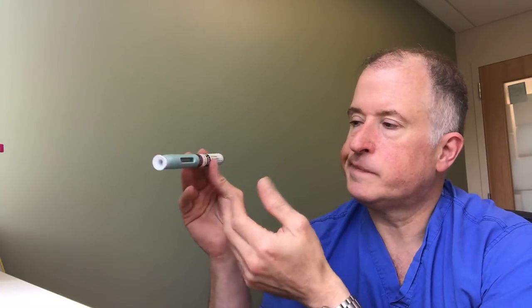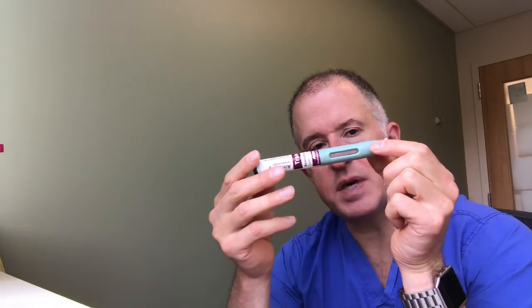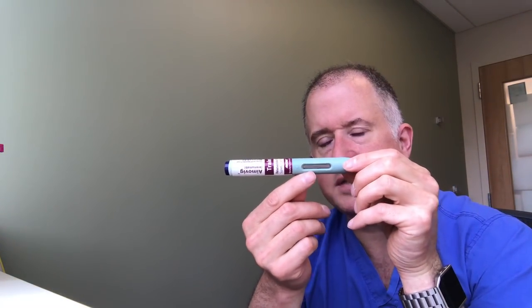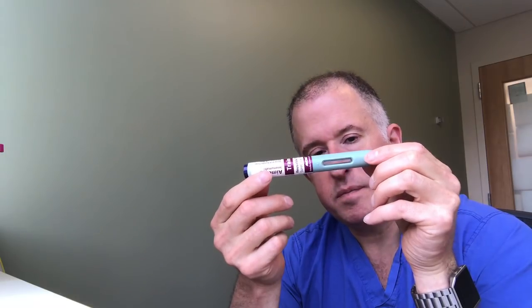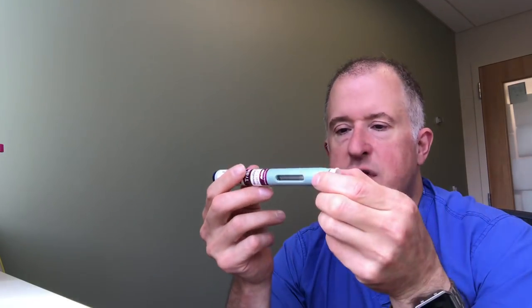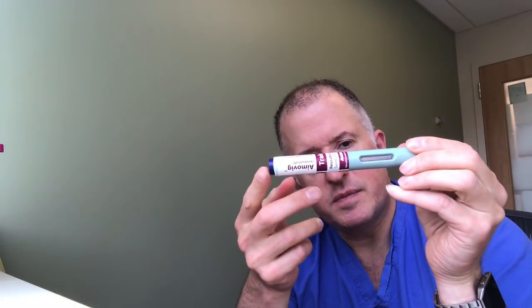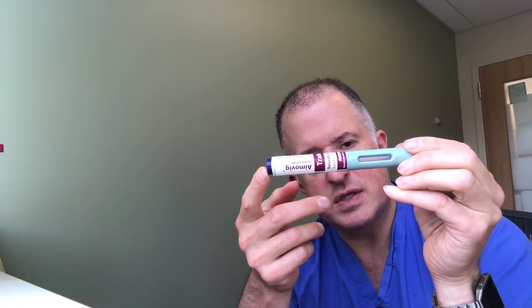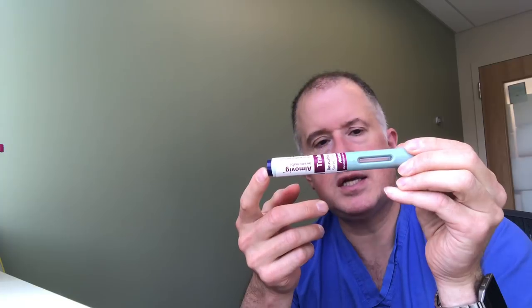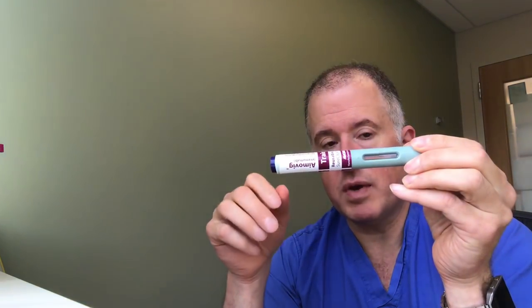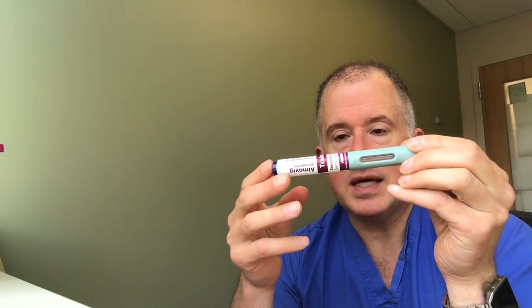Prior to use, the auto-injector should be inspected. There's a little inspection window right there that's made out of clear glass. I would look at the liquid inside and make sure that it's clear. Sometimes there's a slight yellow tinge, but there should definitely not be any cloudiness or any particles floating around, and there shouldn't be any cracks in the glass.